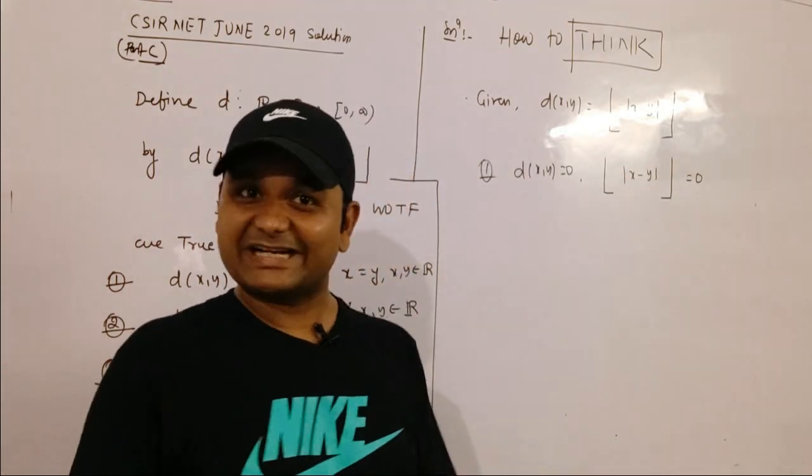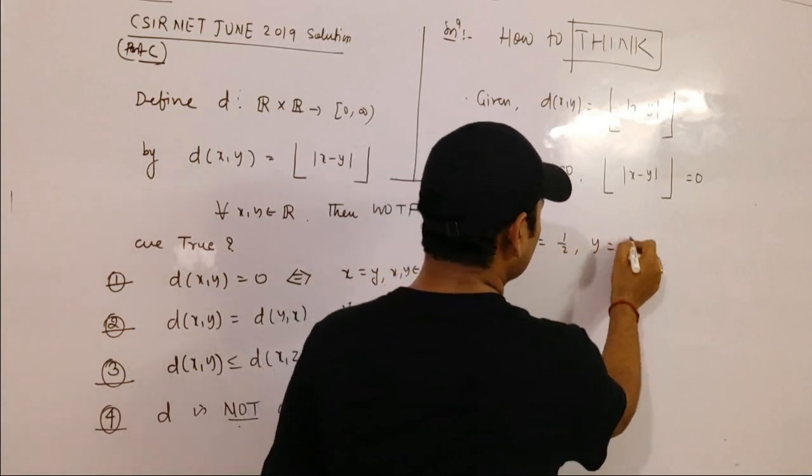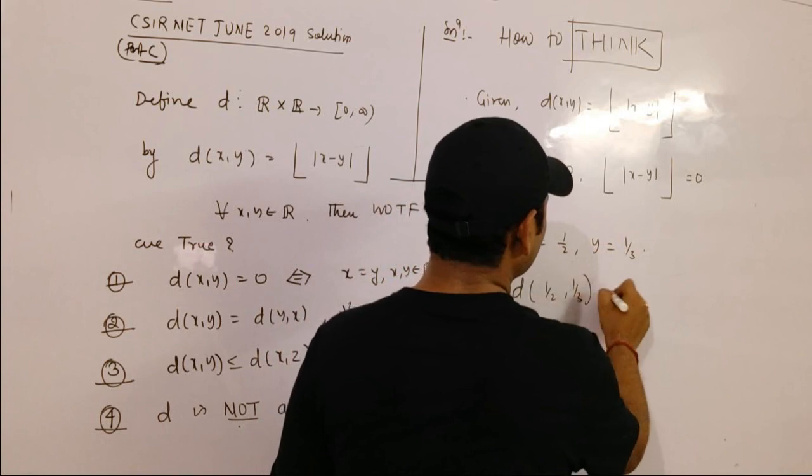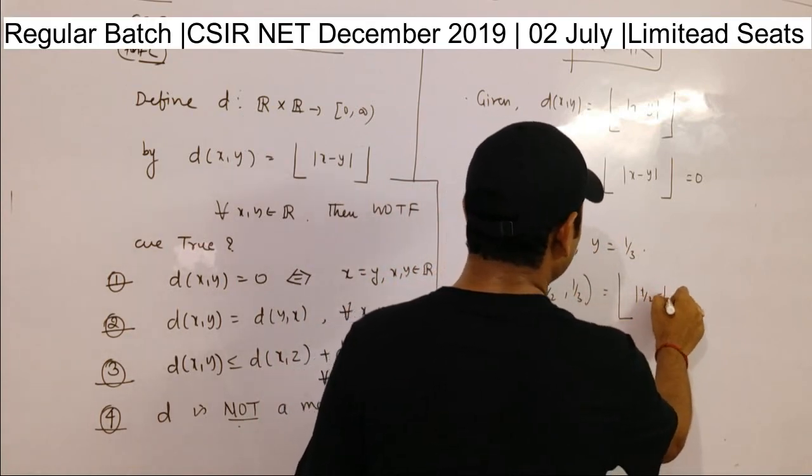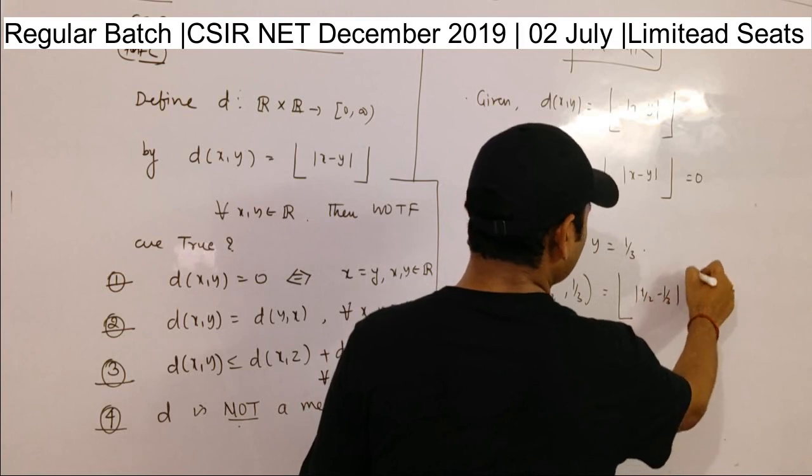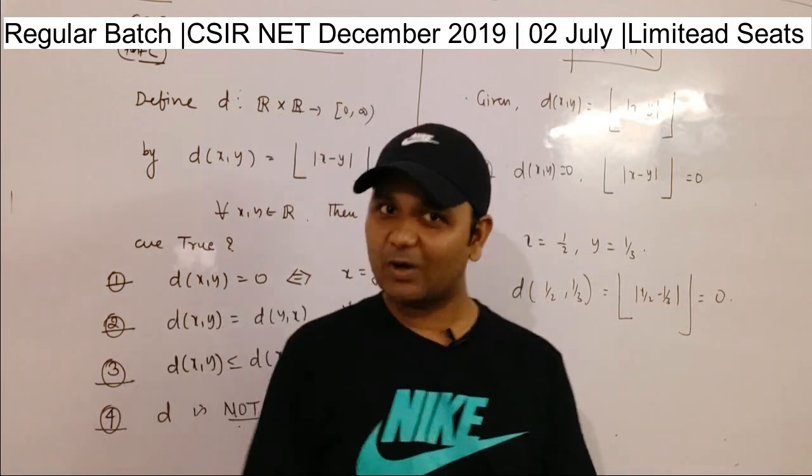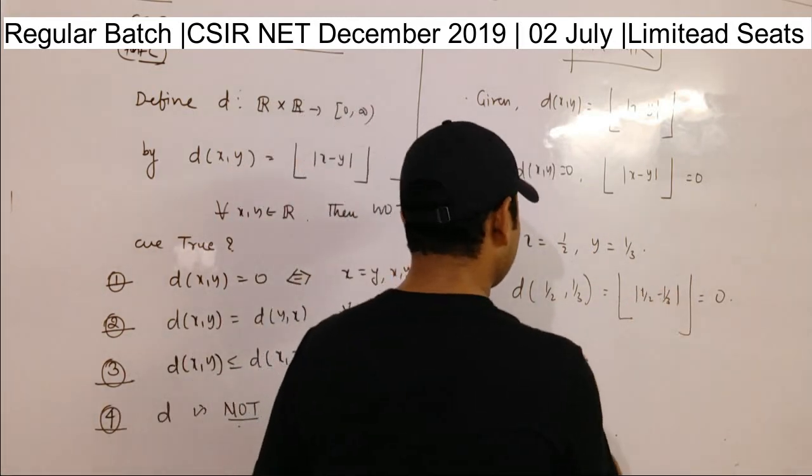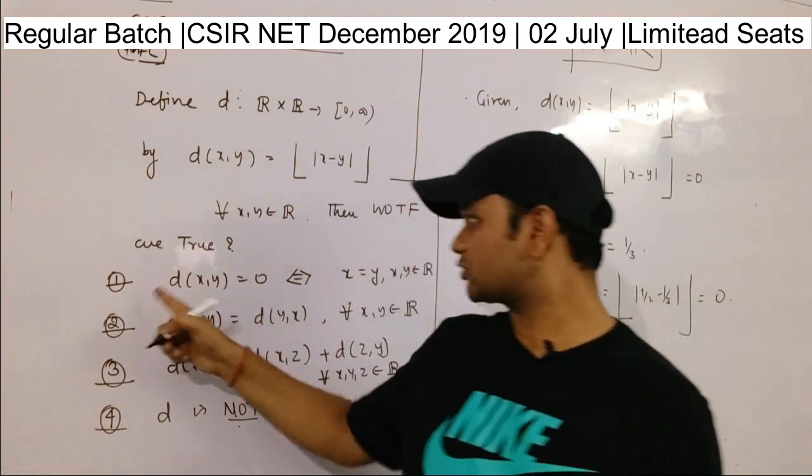So what is d(1/2, 1/3)? That is equal to [|1/2 - 1/3|], and this is of course 0 because the inside quantity is less than 1. Hence this is 0, but x is not equal to y. So the first option is wrong.